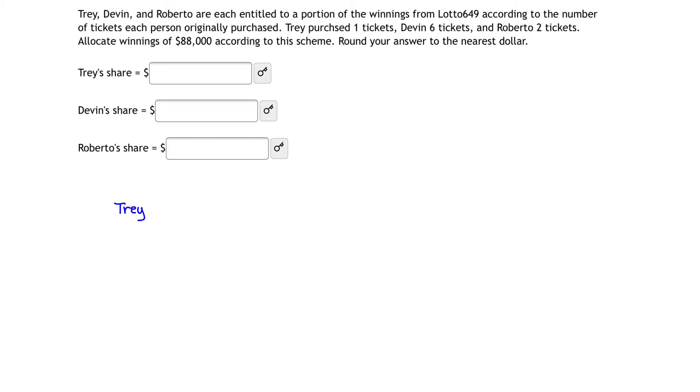Let's take a look at Trey to start. Trey purchased one ticket. How about Devin? Devin purchased six tickets. And finally, we have Roberto, our last winner. He purchased two tickets. That means our winnings are going to get allocated among these three gentlemen and they have purchased a total of nine tickets.